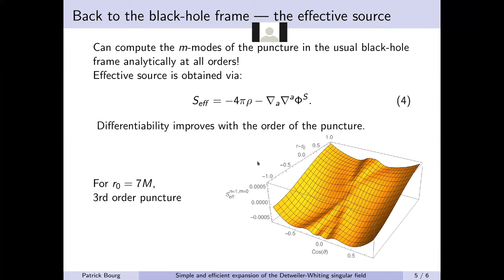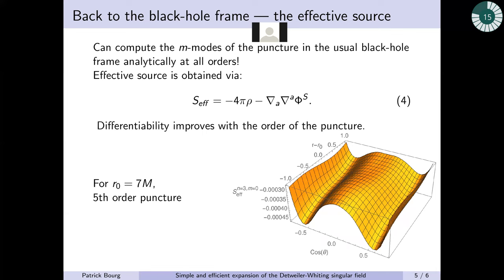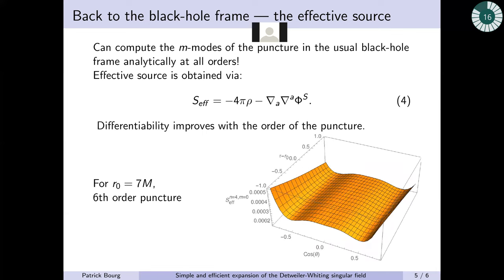When you crank up the algebra and you take into account higher and higher order in your puncture, the effective source improves in differentiability. Once you take into account the first four orders, it's then continuous and once differentiable, then at the next order, it's then twice differentiable. And it goes on like that.